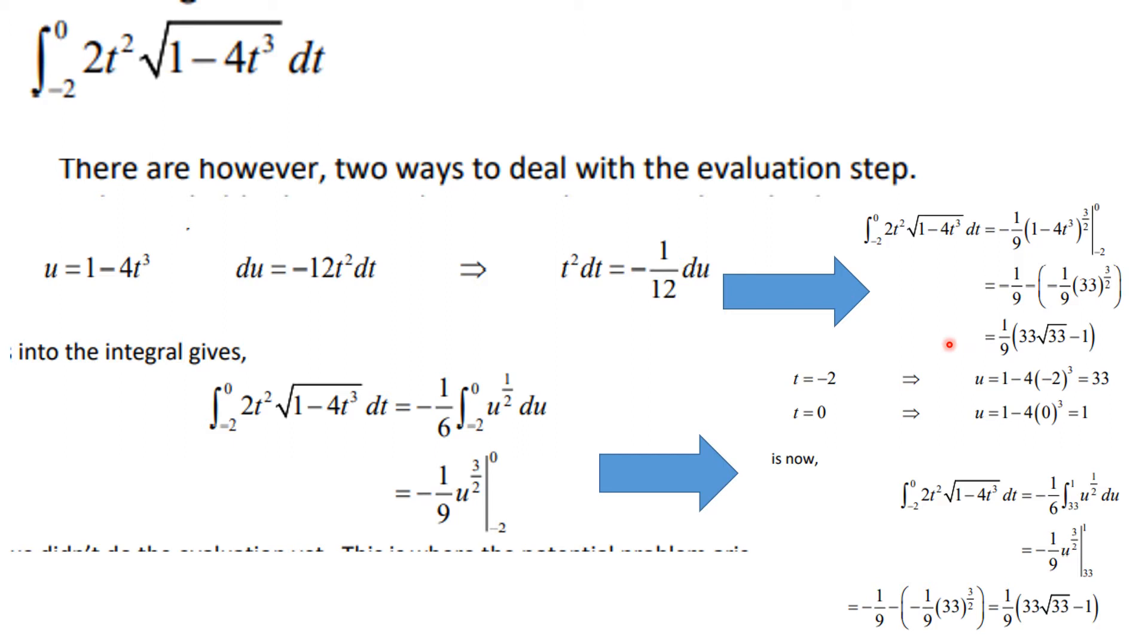But there's another way to do the problem, and that's to realize that you've already created a substitution. So instead of using the t values we can use u values. When t equals minus 2, the lower limit, we plug into our substitution and find that u equals 33. Similarly when t equals 0 we find that u equals 1. So this integral is the same thing as this integral, but now our limits are u values. One is the top limit and 33 is the bottom limit. If we plug those in we get exactly the same answer.